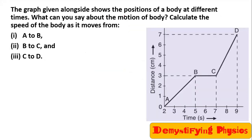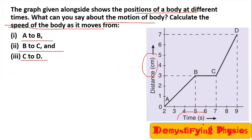The graph given alongside shows the positions of a body at different times. What can you say about the motion of the body? Calculate the speed of the body as it moves from A to B, B to C, and C to D. Distance is in centimetres, time is in seconds. From A to B it is a straight line, so it is uniform motion or uniform speed.